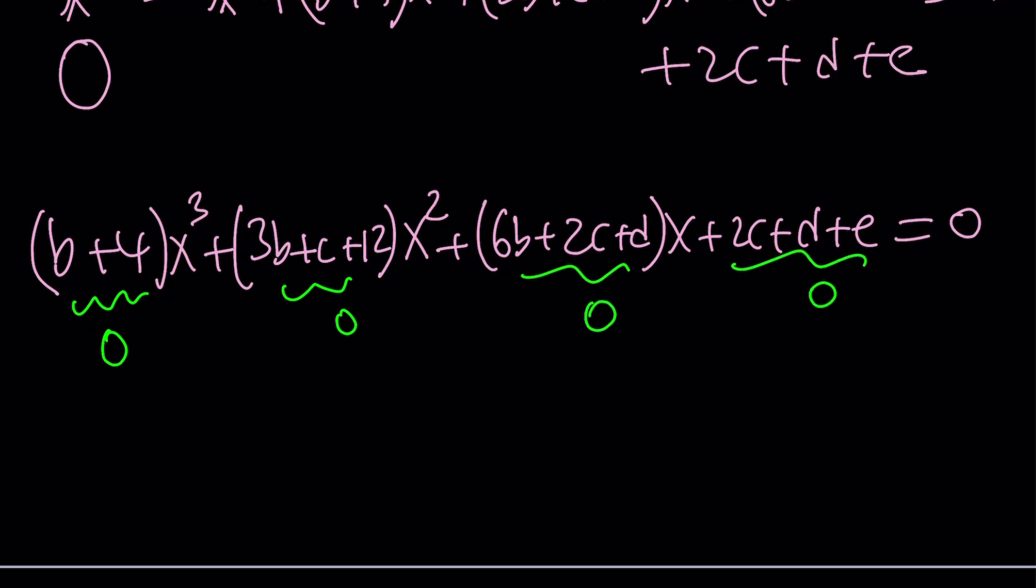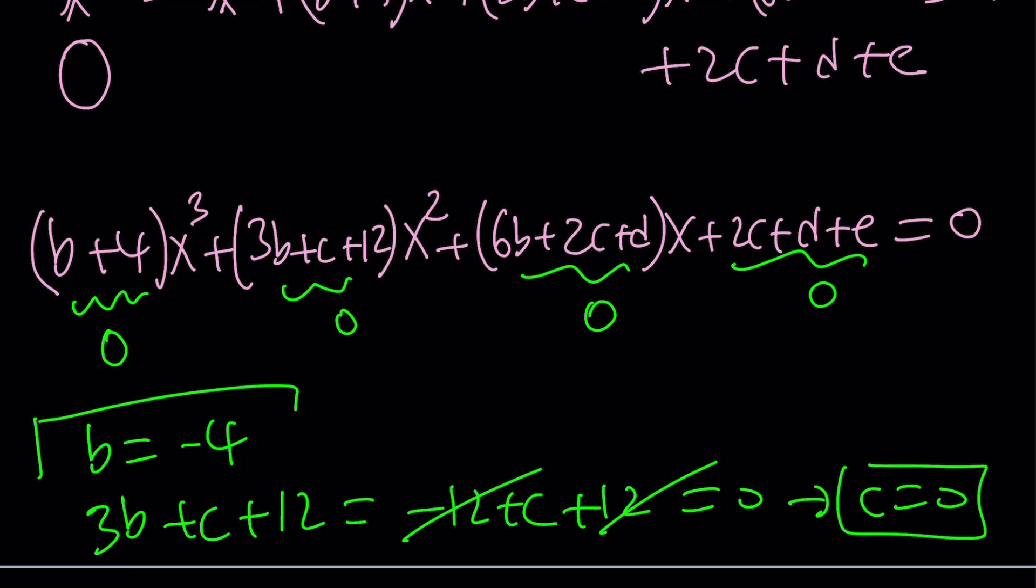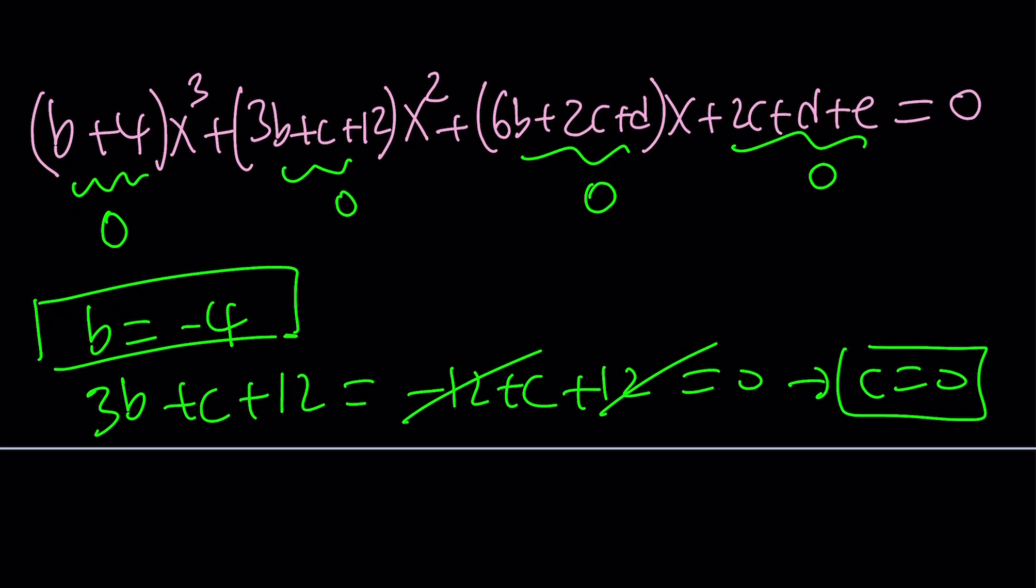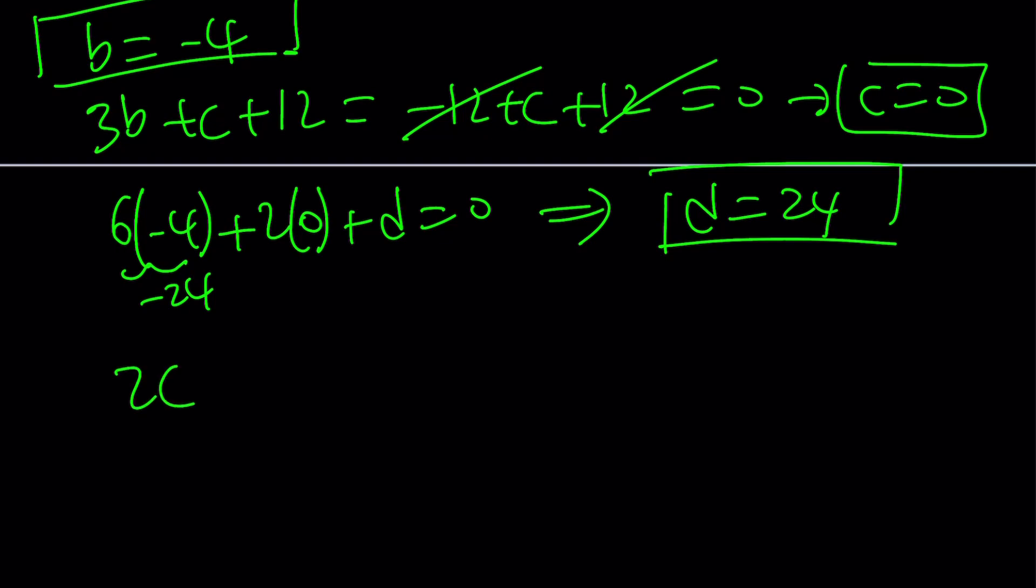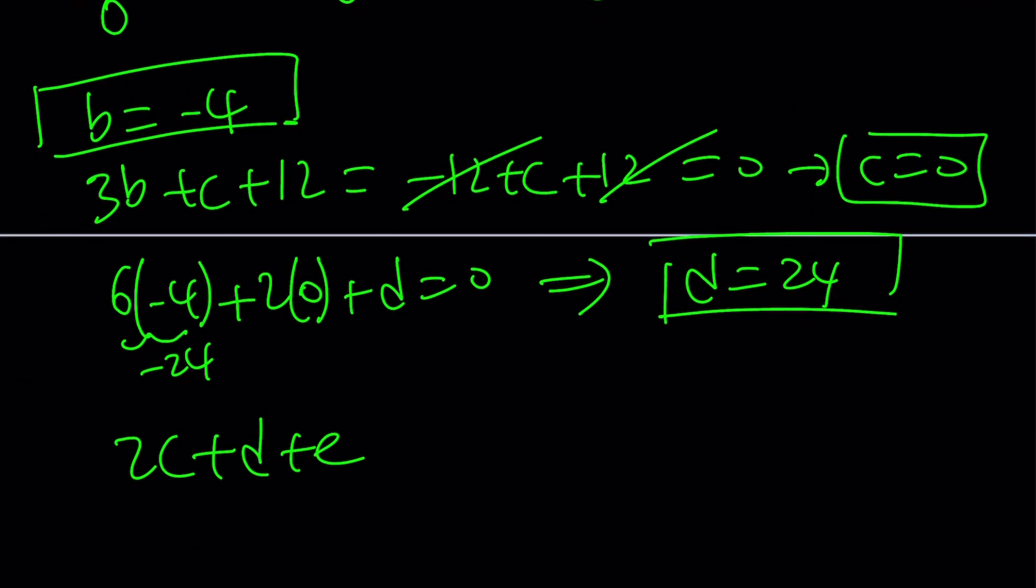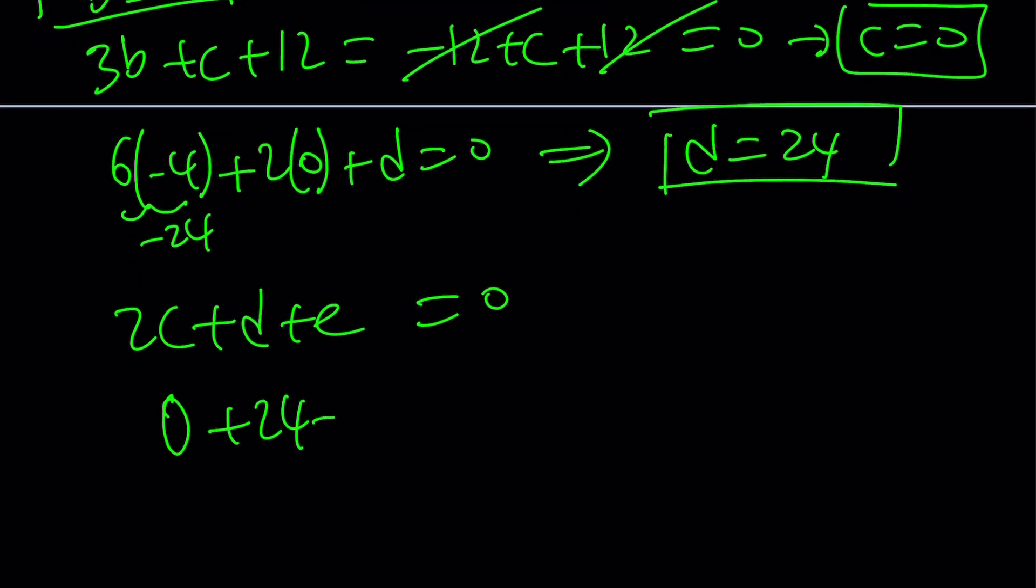So what does this give me? B plus four equals zero obviously gives you B equals negative four. The second equation gives you 3B plus C plus 12 which is negative 12 plus C plus 12 equals zero which means C is equal to zero. Great. I got B and C so far. Now I got to find D and E. Go to the third equation: 6B which is six times negative four plus 2C which is two times zero plus D equals zero. This is negative 24. D becomes positive 24. And then finally I'm going to find E: 2C plus D plus E is equal to zero. Now C is zero. D is 24. E is negative 24 from here. So I got all my values.